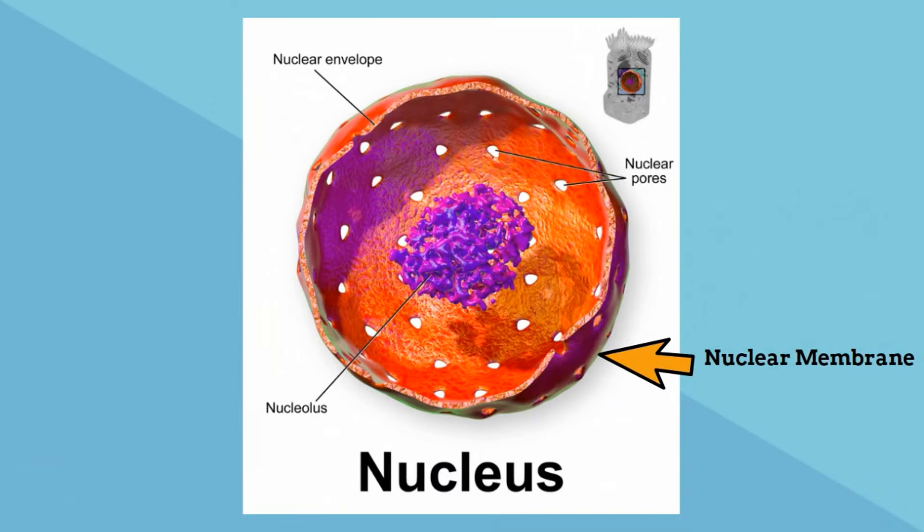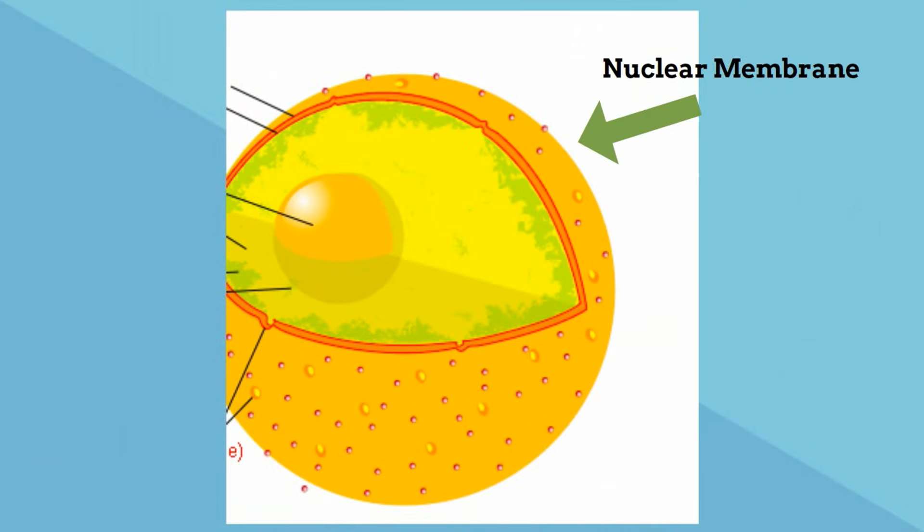The nucleus is surrounded by a nuclear membrane. This is very similar to the cell membrane and is also composed of two layers. It protects and houses the other parts of the nucleus. You can also find ribosomes on the outside of the nuclear membrane.